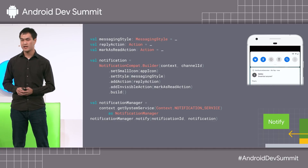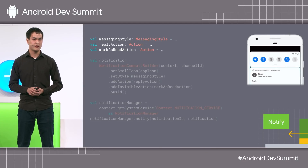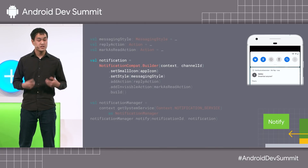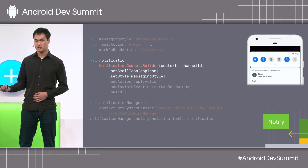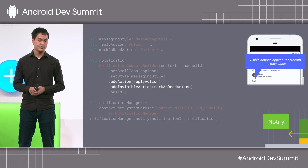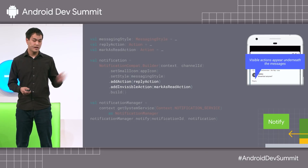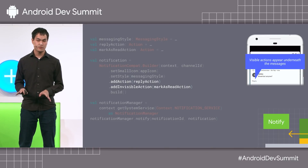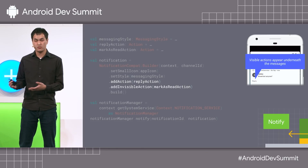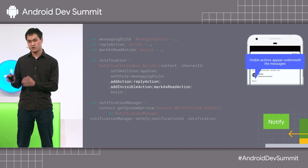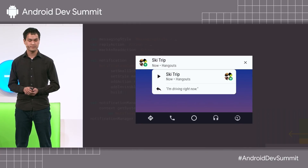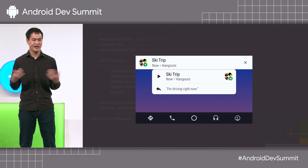That's all three pieces — the notification can now be built. For reference, here are the three elements we created: messaging style, which holds all our conversation information, our reply action, and our mark as read action. To build the notification, some boilerplate is provided and then we set the messaging style and add our actions. Note that the reply action is added as a regular visible action and the mark as read action is added as invisible — this is purely stylistic. On Android Auto, actions are never shown, but Android Auto will be able to read both visible and invisible actions. Finally, the messaging app can post the notification, and my friends and I have planned breakfast on the road — our ski trip is underway.